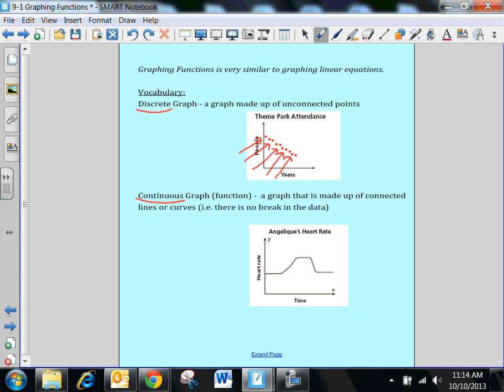For the second word, continuous, that could be a graph or it could just be a function. It's the same with discrete. It could be a discrete function or graph. It's just made up of connected lines or curves. So in this example down here, you see that the line is connected. It never has a break in it. It continues the whole time. It's continuous.